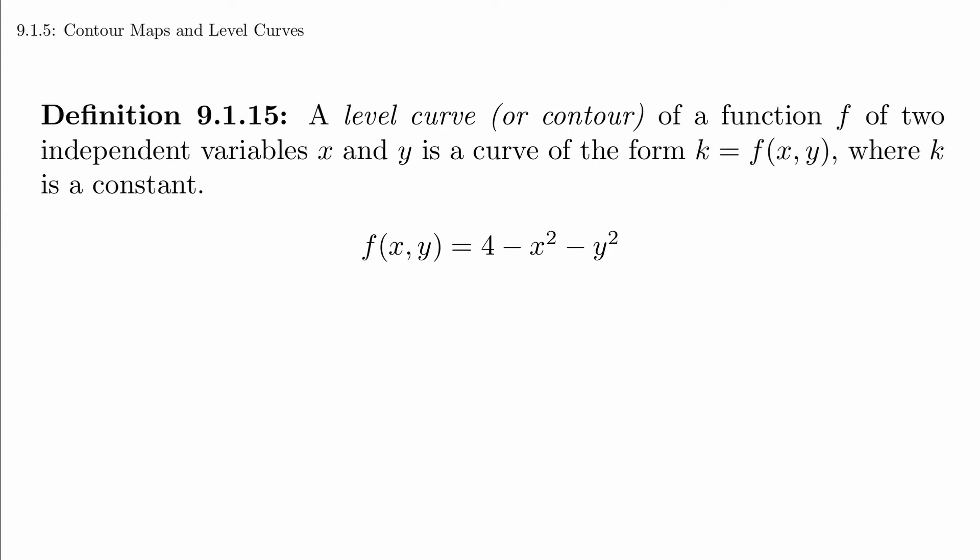Let's look back at the example we used earlier. What is the level curve at height zero? We simply set the left side to zero and move terms around to get x squared plus y squared equals 4. In other words, we get a circle of radius 2 centered at the origin.